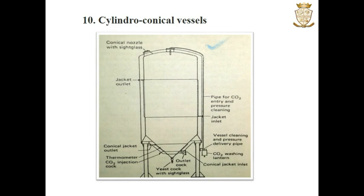Cylindroconical vessels are generally used for brewing. The vessel consists of a stainless steel vertical tube having a hemispherical top and a conical bottom. The media is inoculated with yeast, and during fermentation there is generation of carbon dioxide bubbles. Proper mixing of the contents within the fermenter is achieved by the rapid rising of the carbon dioxide bubbles generated during fermentation.